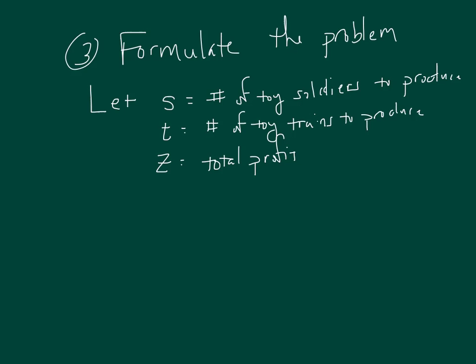First, define the decision variables. Step two of the formulation is define the objective. Because I'm dealing with profit, I'm going to maximize Z. I need actual data to put the coefficients together. Let's say I make four dollars for each soldier I make and sell, and three dollars for each toy train. So max Z = 4S + 3T. That is linear - for each soldier I make and sell, I make four bucks, same for each toy train.